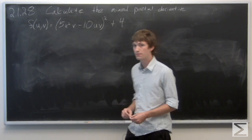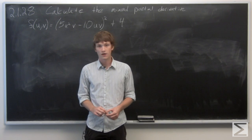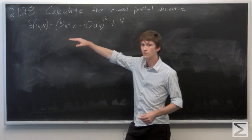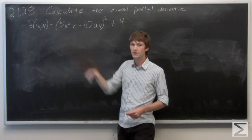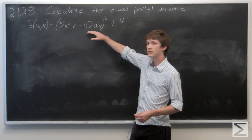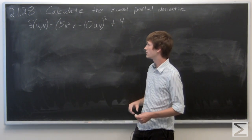OK, in this problem we're asked to calculate the mixed partial derivative of the given function f(u,v) = 5u²v - 10uv² + 4.